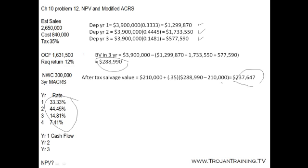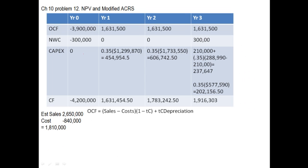We will use that number later on — it's going to be part of the cash flow in the year that we sell the asset, and we will add it to our cash flow. To calculate the OCF, the operating cash flow, we will use the tax shield approach, meaning we use this formula.